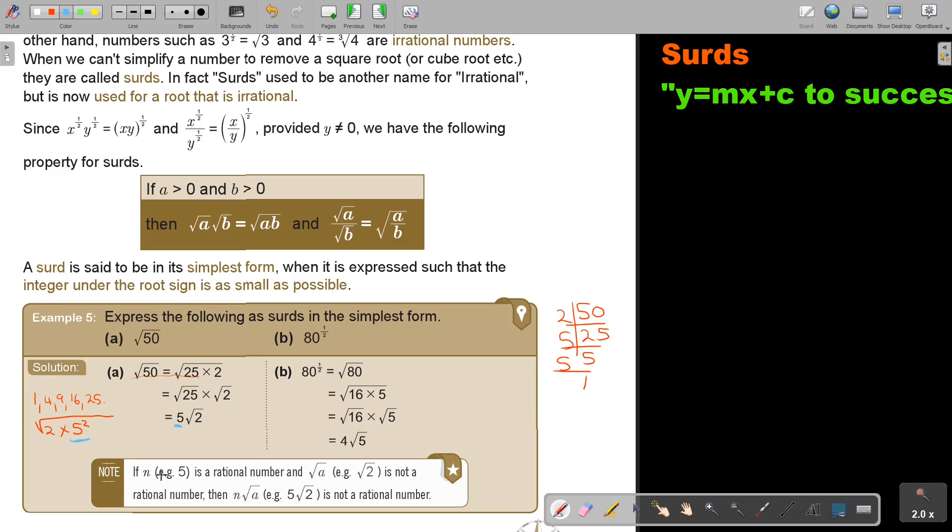Now, this is important. If N, for example, 5 is a rational number, and A is not a rational number, so that part is rational, and that part is irrational.